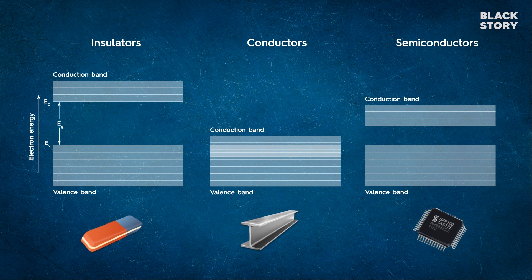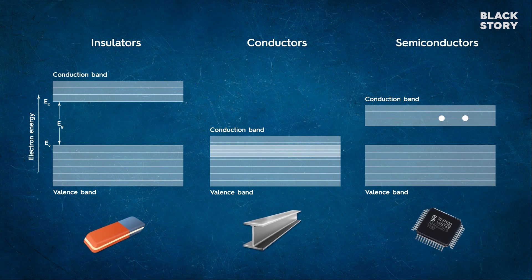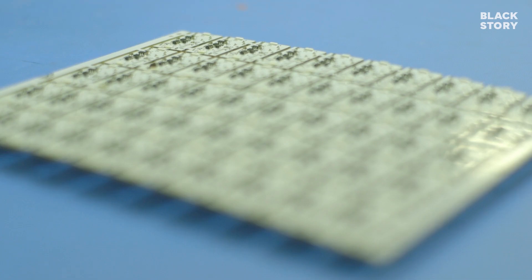In absolute zero temperature, semiconductors act like insulators. With little energy, electrons can move from valence band to conduction band, thus bringing conduction properties.